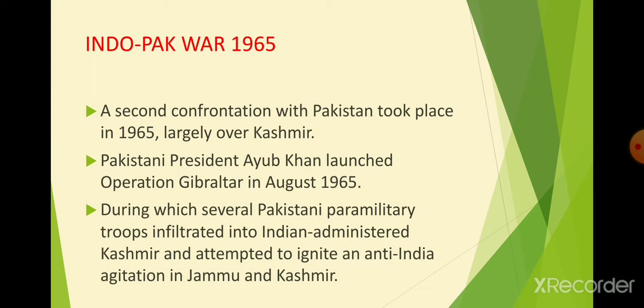Pakistan thought that India was still weak from its 1962 defeat and was also politically weak because the Prime Minister had died. So they thought it was the right time to attack. In 1965, the President of Pakistan, Ayub Khan, launched an operation in the Jammu and Kashmir region.